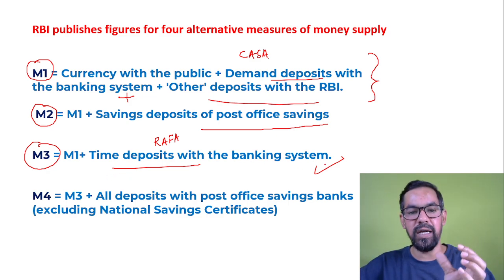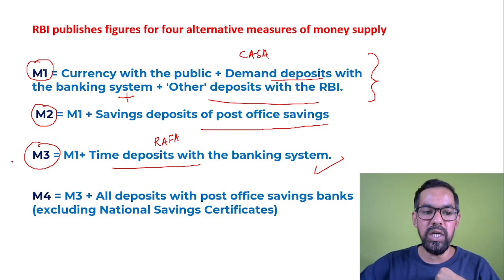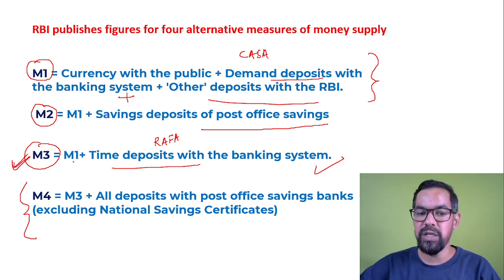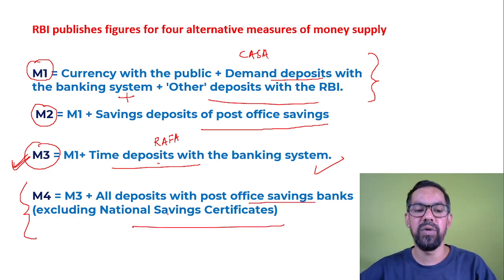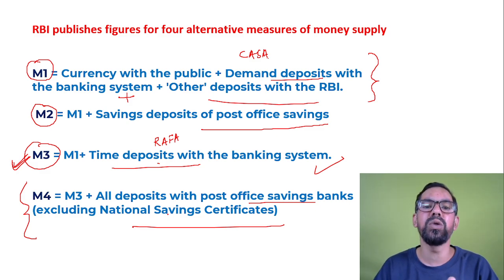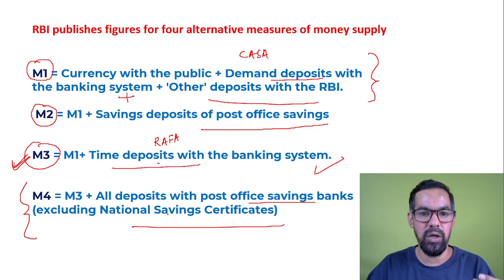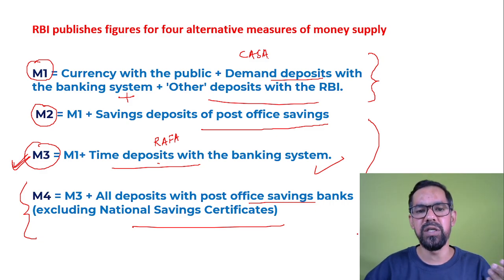M3 is the most appropriate measure of money supply. M4 is M3 — which includes M1 plus term deposits — plus all deposits with post office savings banks, excluding National Savings Certificates. M4 represents the total supply of money in the Indian economy.